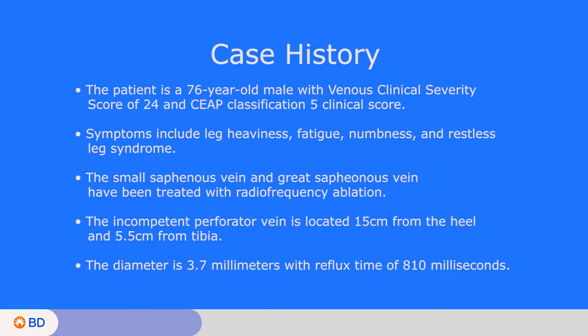The patient is a 76-year-old male with a venous clinical severity score of 24 and a CEAP classification C5 clinical score. Symptoms include leg heaviness, fatigue, numbness, and restless leg syndrome.